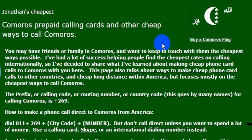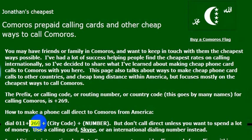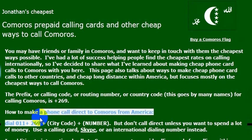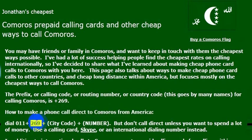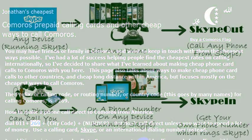If I needed to pick up the phone and make a call to Comoros, what I would do is dial the international calling code, which is 011 — that lets my phone know I'm making an international phone call. And then I would need to know the country code for Comoros, which is 269.